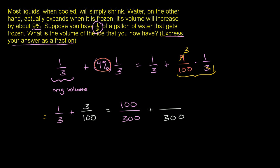So 3 hundredths is the same thing as 9, 9, 3 hundredths. And now we're ready to add. This is going to be 100 plus 9 over 300, which is 109 over 300. So this is the volume of ice that I now have expressed as a fraction.